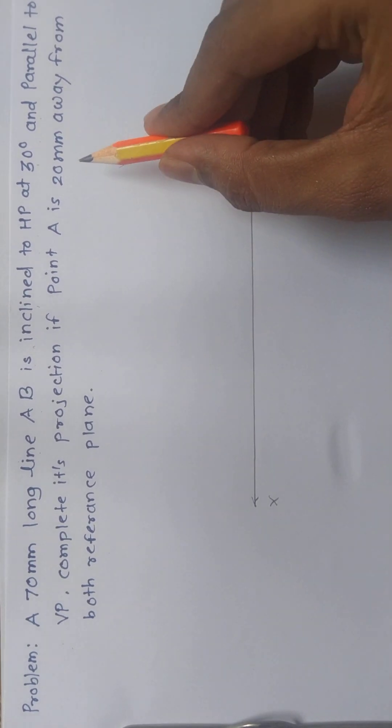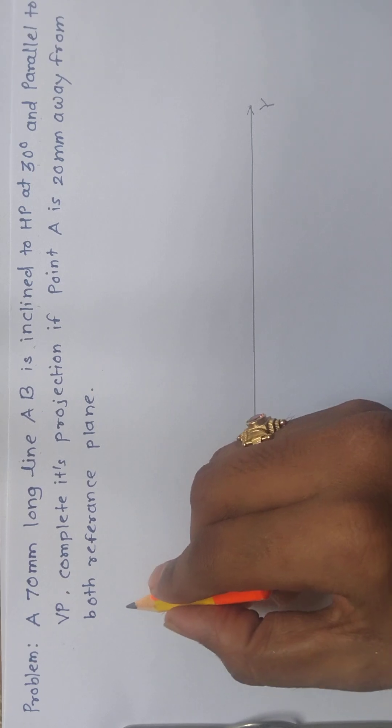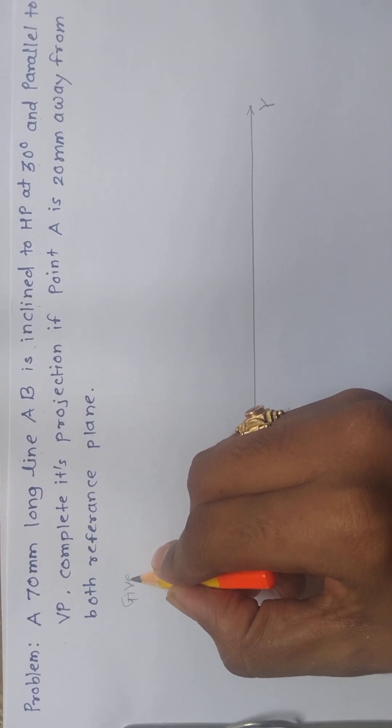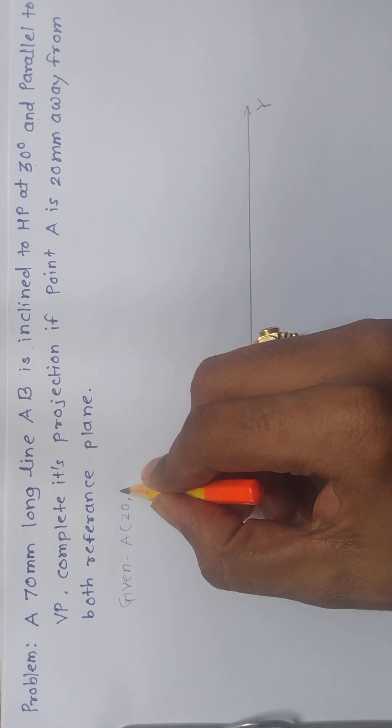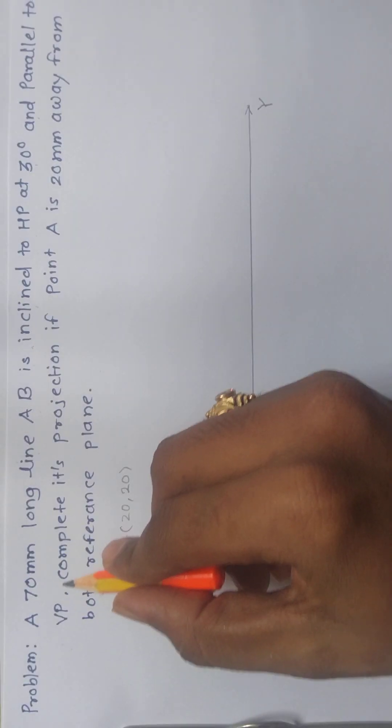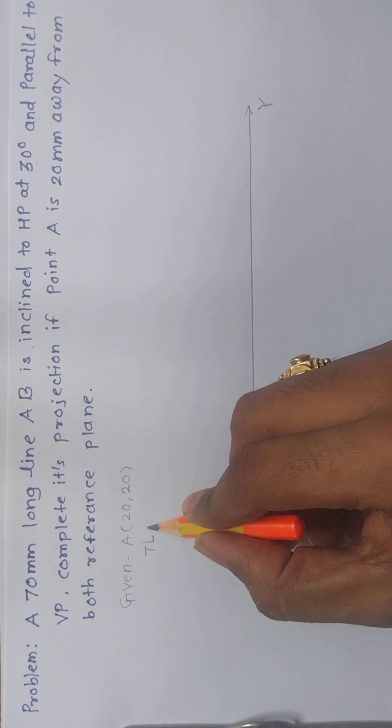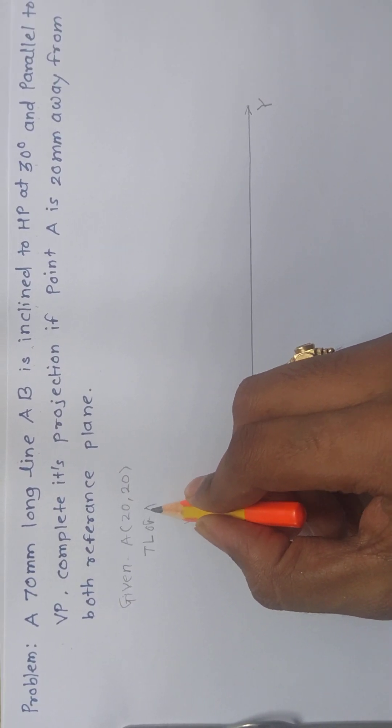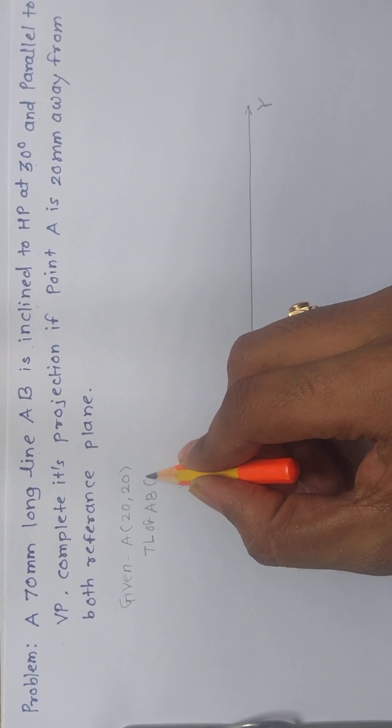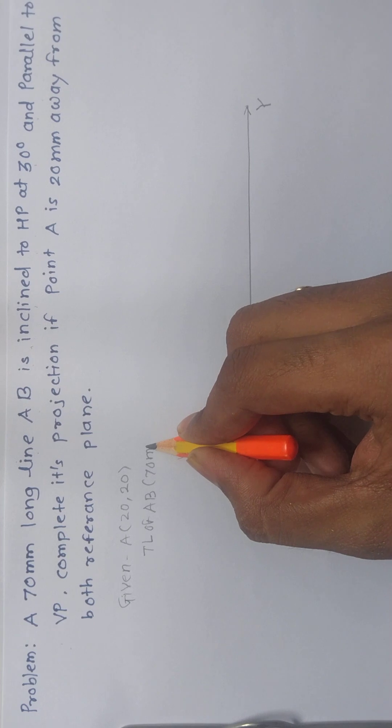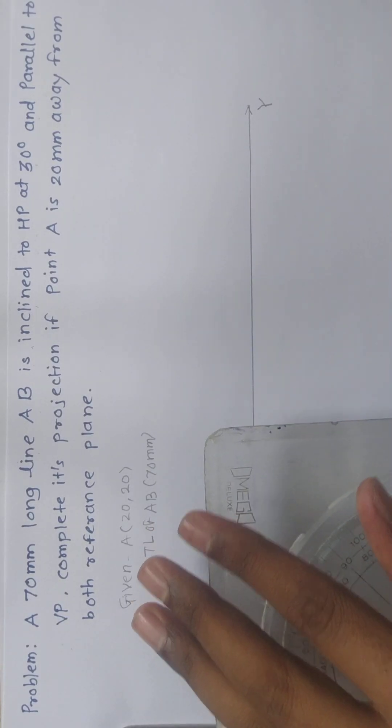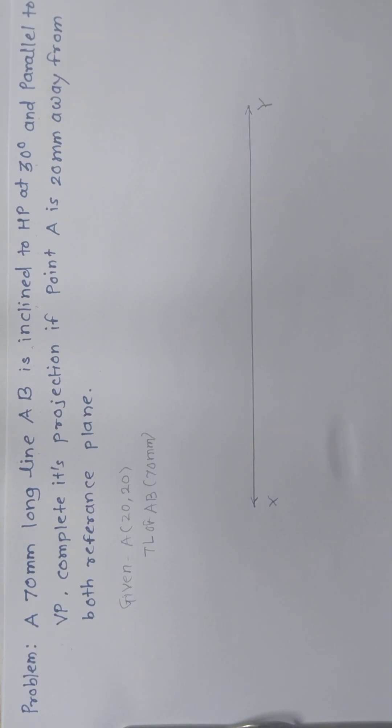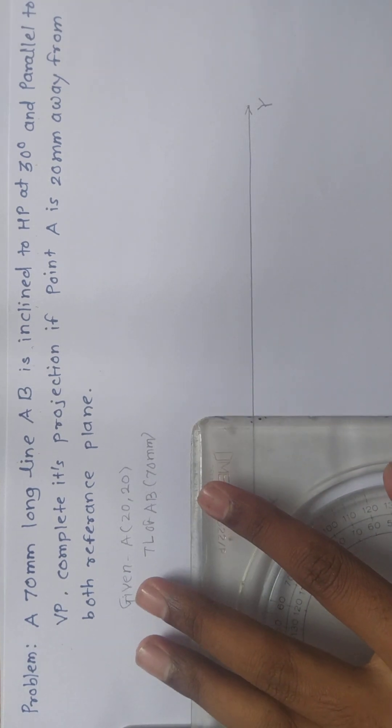We have to mark the given data. Given is point A at 20 comma 20, and the true length of AB is 70mm. Now I will mark point A.